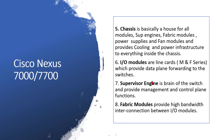The supervisor engine takes care of tables as well: the routing table, MAC address table, access lists, and QoS classifications. The fabric module is just like a connector — once you insert your M-series or F-series modules or supervisor modules into the chassis, you have to insert a fabric module from the backplane so that all modules are interconnected.